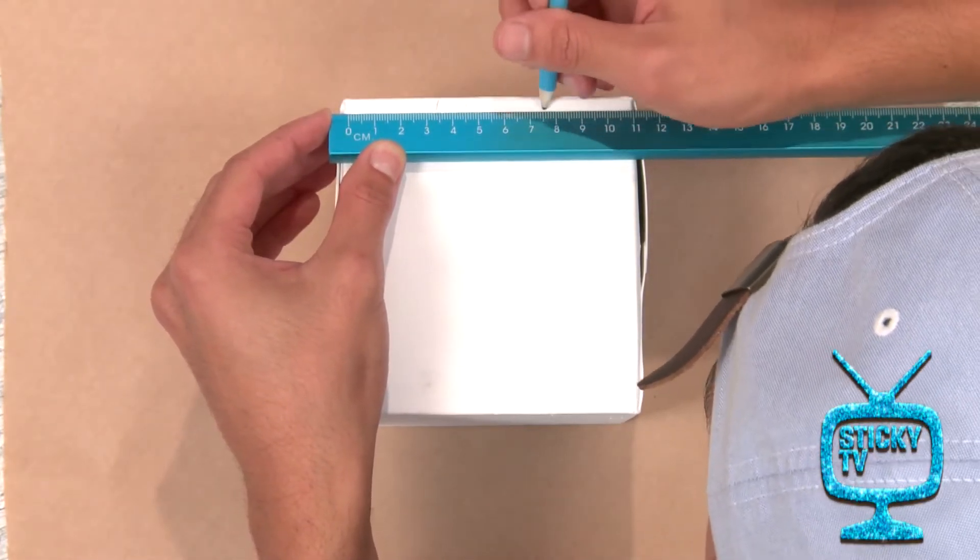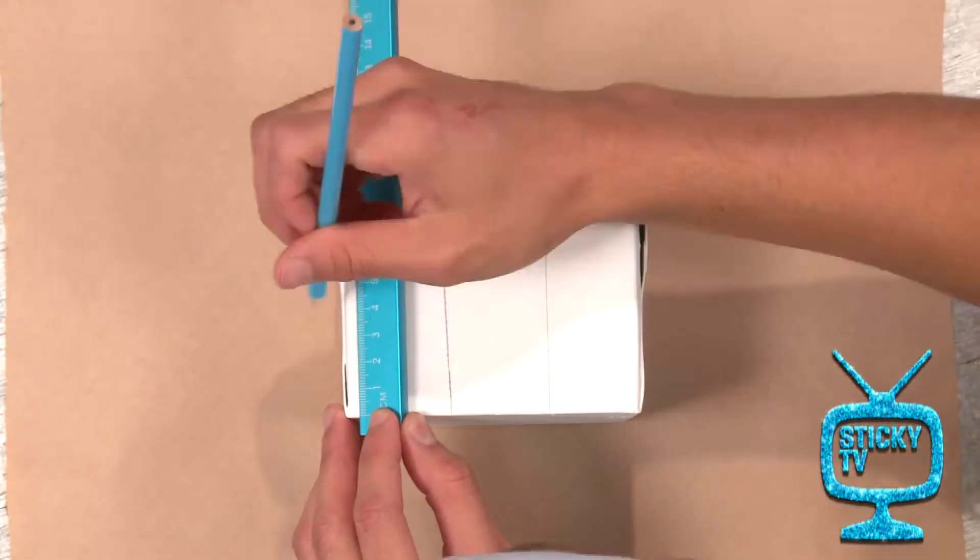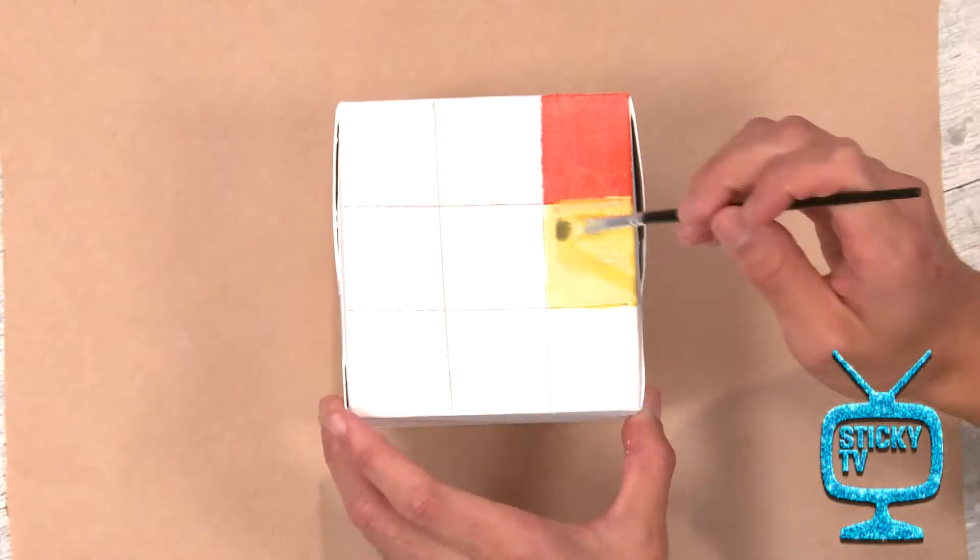Do the same with the height and repeat on each side of the box. This makes an even three by three grid. Step number three: it's time to paint the squares different colors.